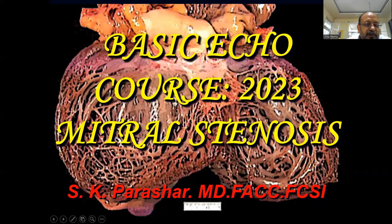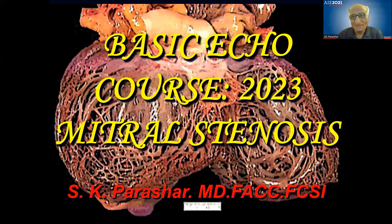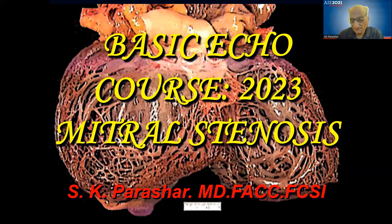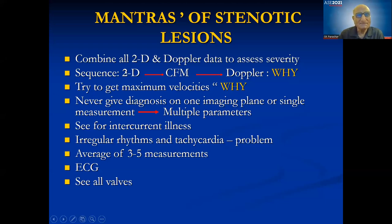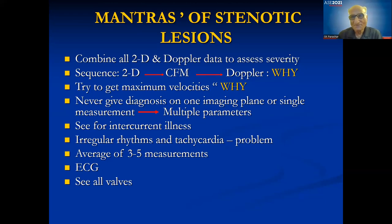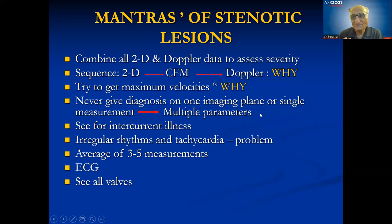We start with some revision of what you learned last time. Always combine 2D and Doppler data to assess severity. The sequence should always be 2D echo first to get anatomical information, then color flow mapping to guide you parallel to the blood flow, to get maximum velocities — because velocities are converted into gradients. Always use multiple scan planes and never give a diagnosis from one imaging plane.